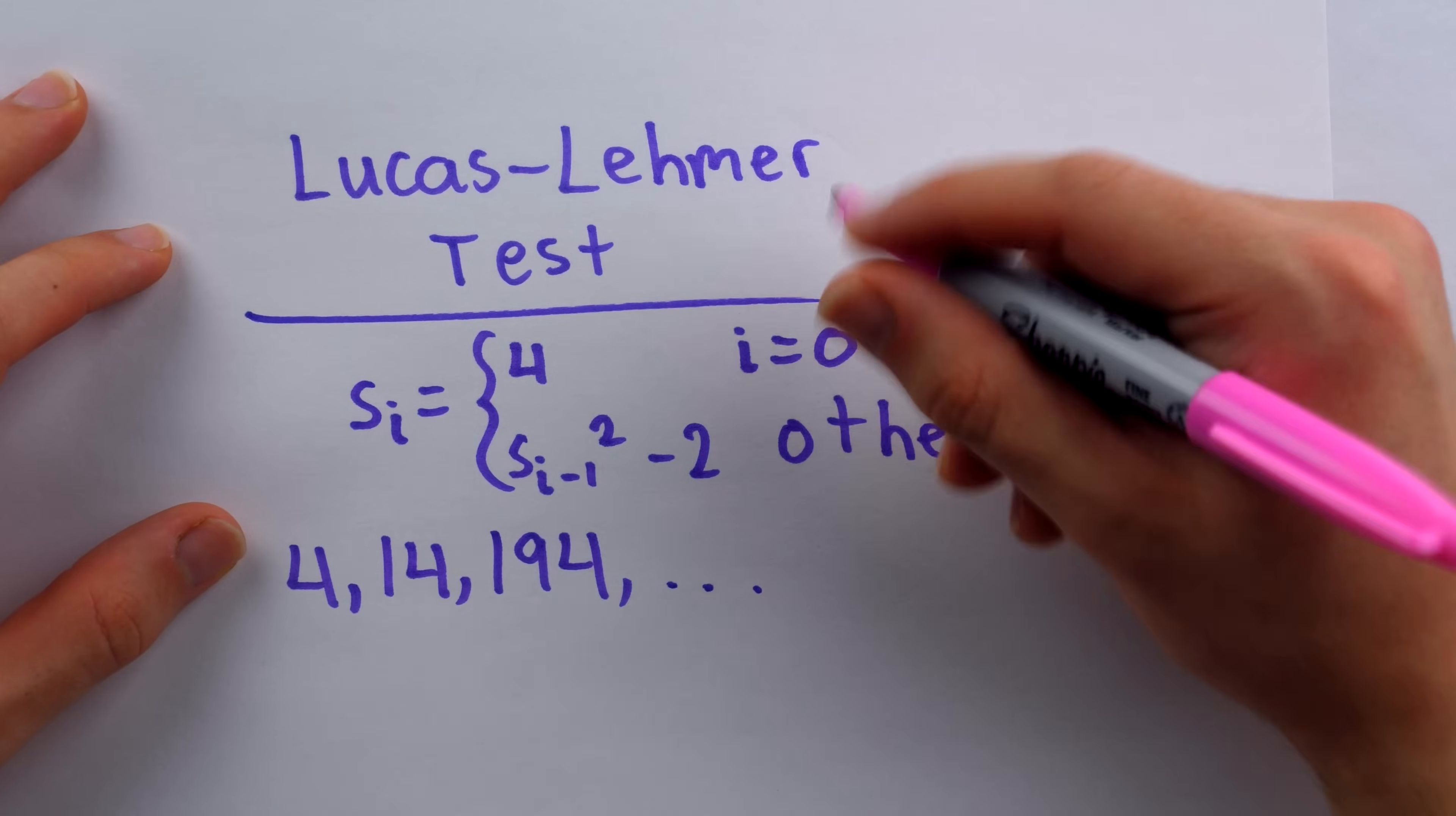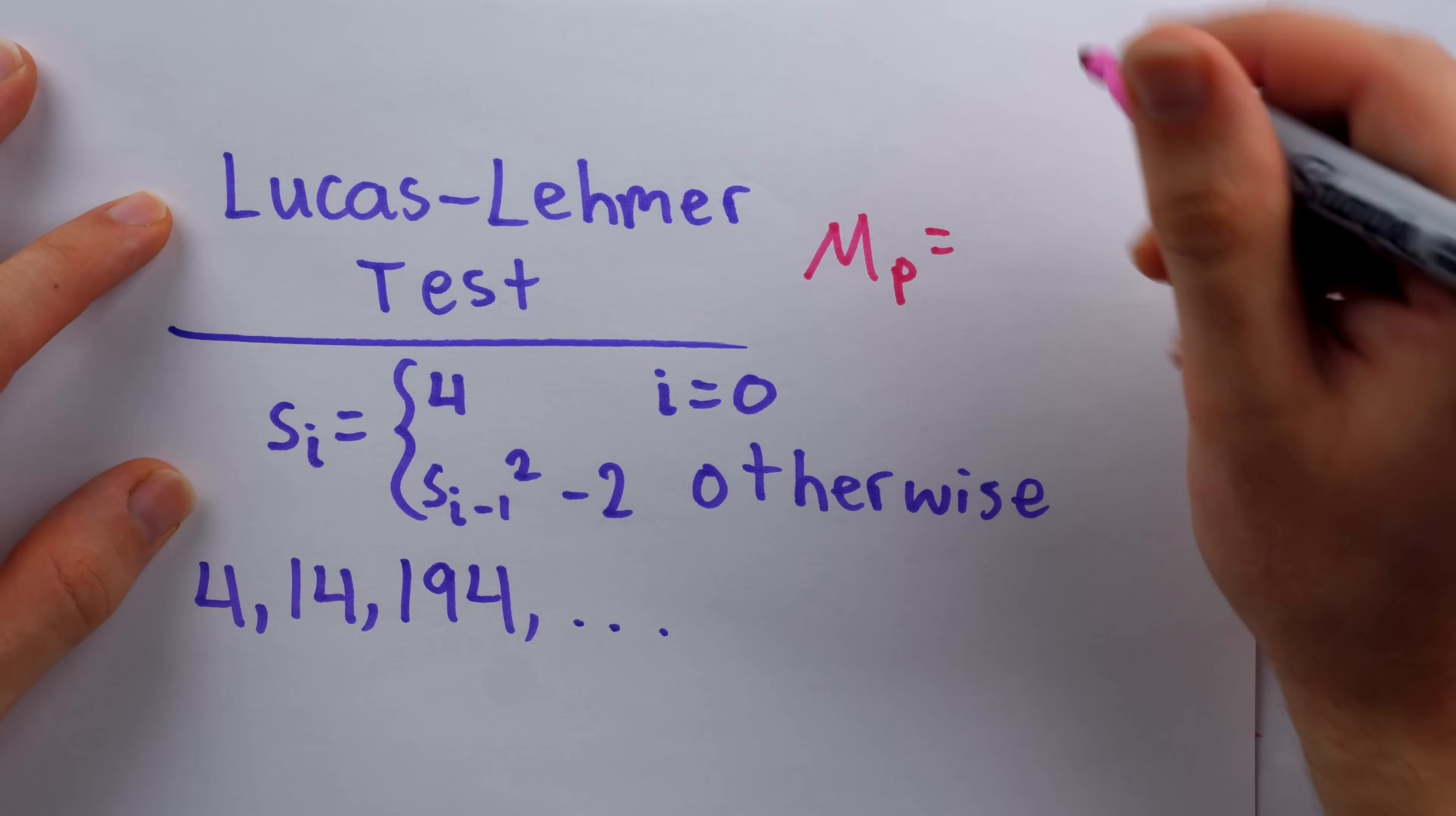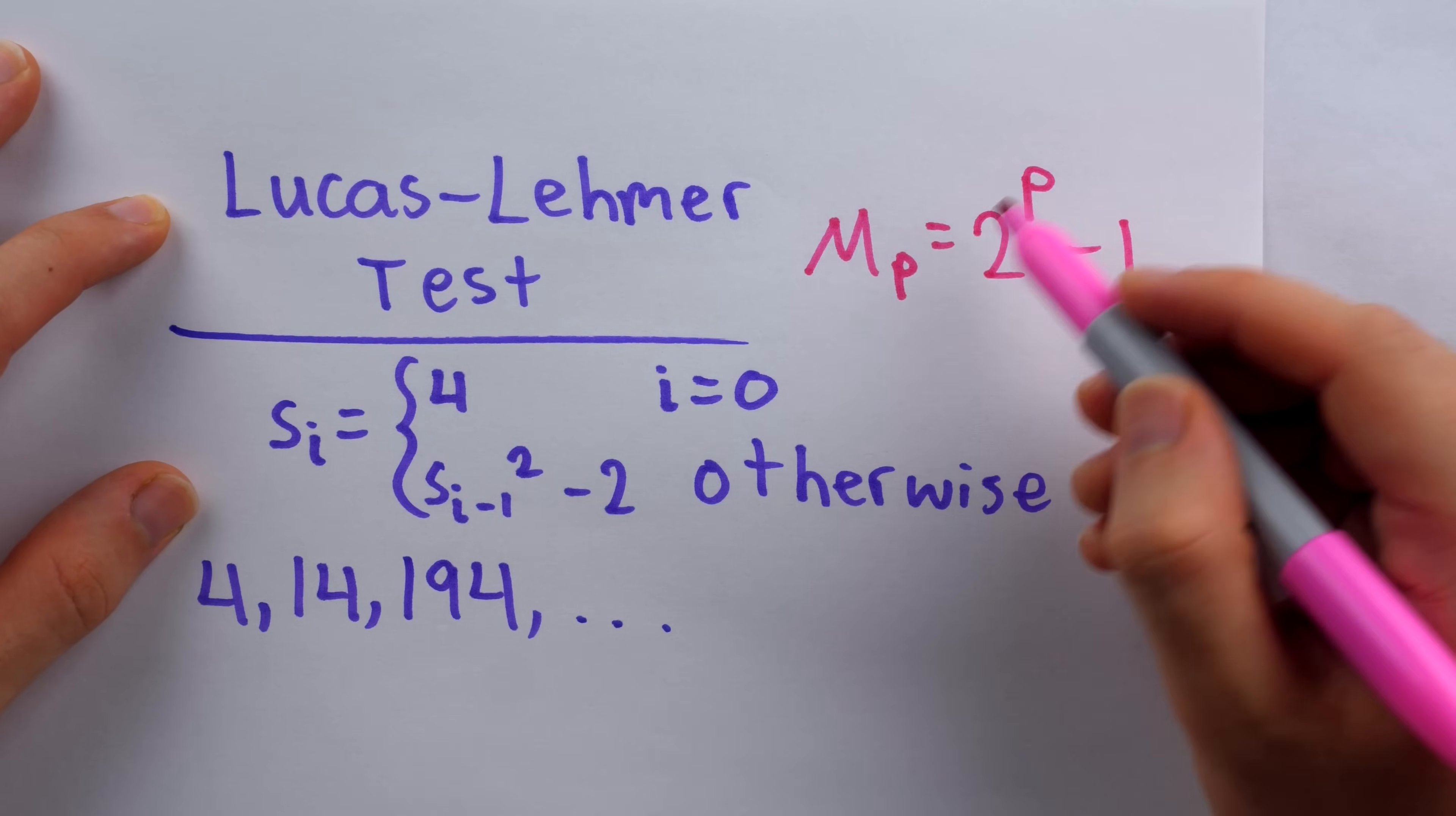Then quick bit of notation here before we state how this test reaches a conclusion. We're going to use the notation M_p to represent this Mersenne number, two to the power of p minus one, where it's understood that p is prime.